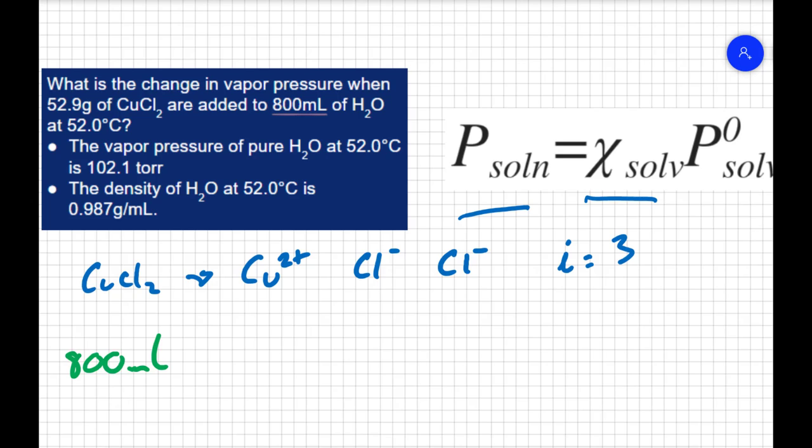It has a density of 0.987, so close, but not exactly one. So 800 milliliters of water times 0.987 grams per milliliter means that my 800 milliliters of water translates to 789.6 grams of water. So the moles of water would be 43.82 moles.